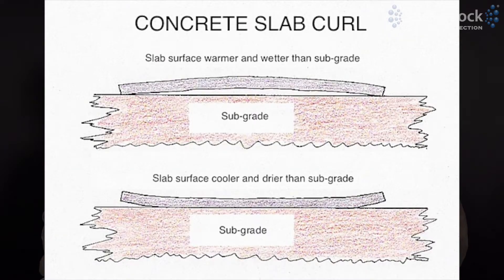It's all caused by the same thing: a differential in moisture and temperature from one surface to the next. If you have variable shrinkage happening at the top surface of the concrete, those edges are going to curl upward. That can be related to moisture or to temperature causing thermal movement that's different from each surface.